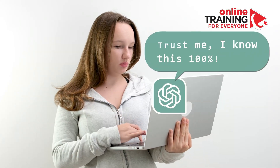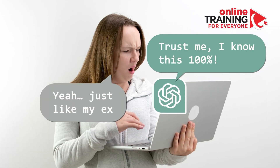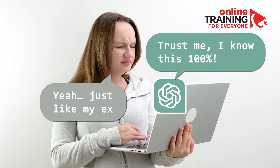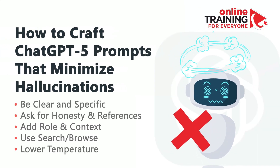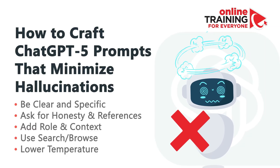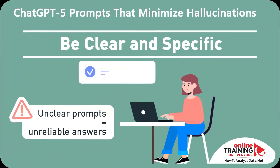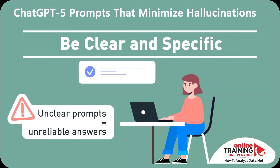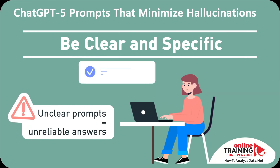Sometimes ChatGPT 5 will sound confident, but the answer is wrong. These are called hallucinations. Let me walk you through five practical ways to reduce them with quick demos along the way. Number one, and the most frequent reason you get hallucinations, is that you need to be clear and specific. Hallucinations often happen when prompts are vague.